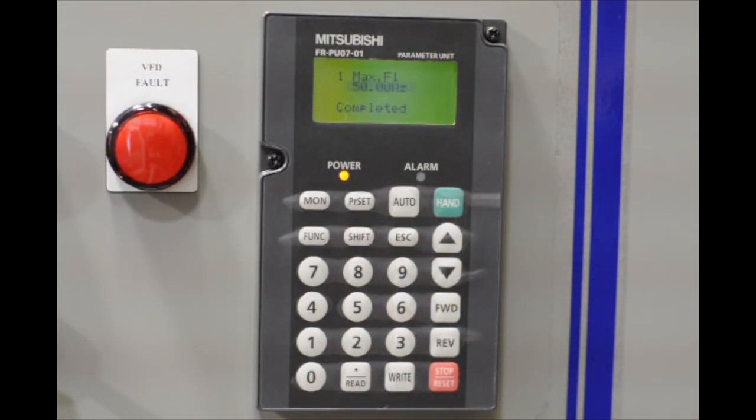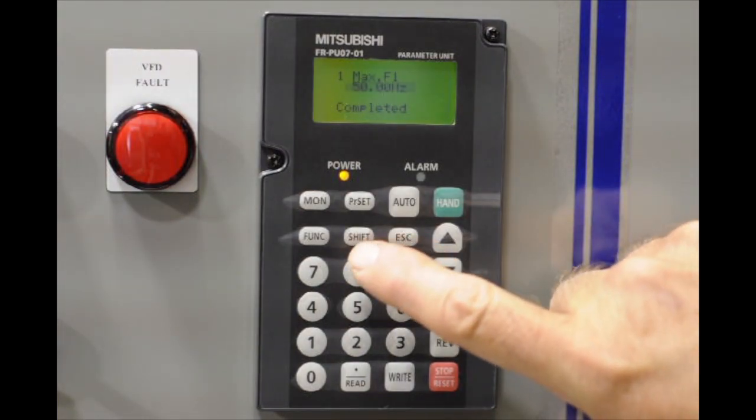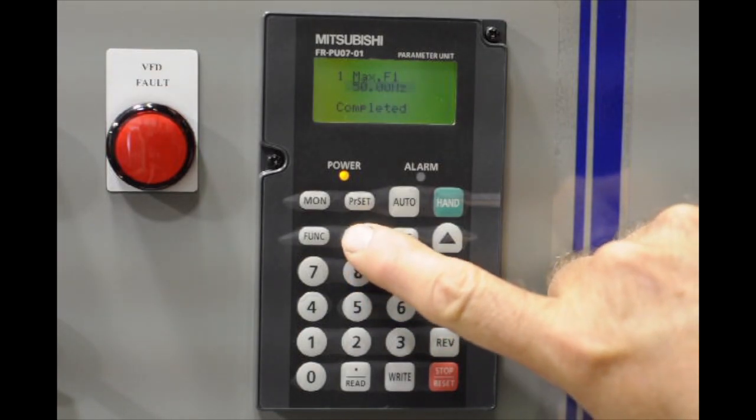You'll notice the parameter blinks and the backlit is lit, and you can go ahead at this time and move on to the next parameter, which is going to be parameter two.